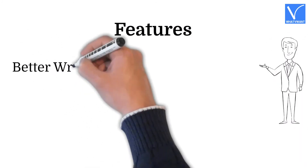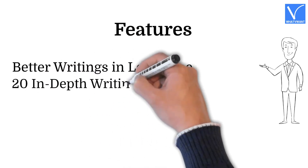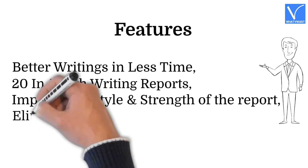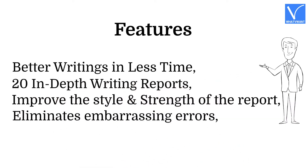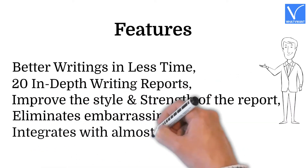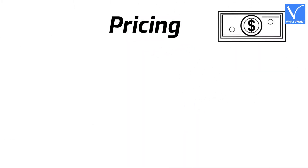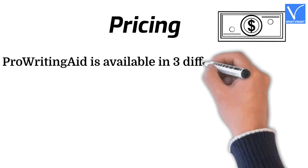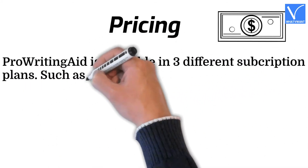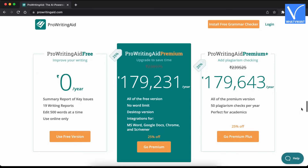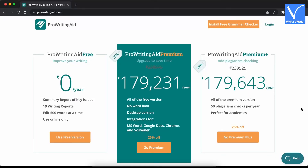Features: Better writings in less time. 20 in-depth writing reports. Improved style and strength of the report. Eliminates embarrassing errors. Integrates with almost all browsers. Pricing: ProWritingAid is available in three different subscription plans — Monthly, Yearly, and Lifetime Subscription. The prices of all three subscriptions are displaying on the screen.